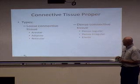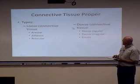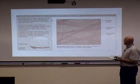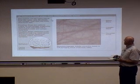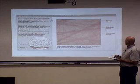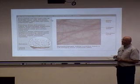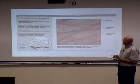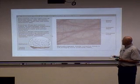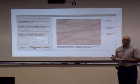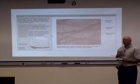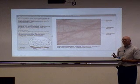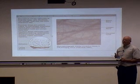We'll start with loose connective tissue — areolar connective tissue. Notice it has elastic and collagen fibers that are widely spaced and organized in random directions. This connective tissue is widely distributed under the epithelial tissue of the body, helping to give epithelial tissue strength and elasticity.